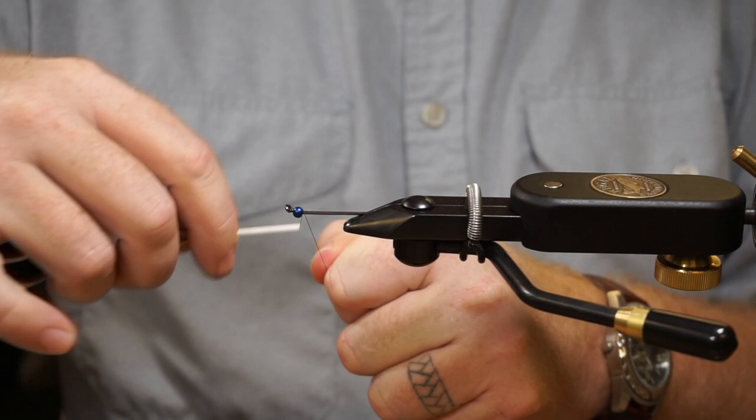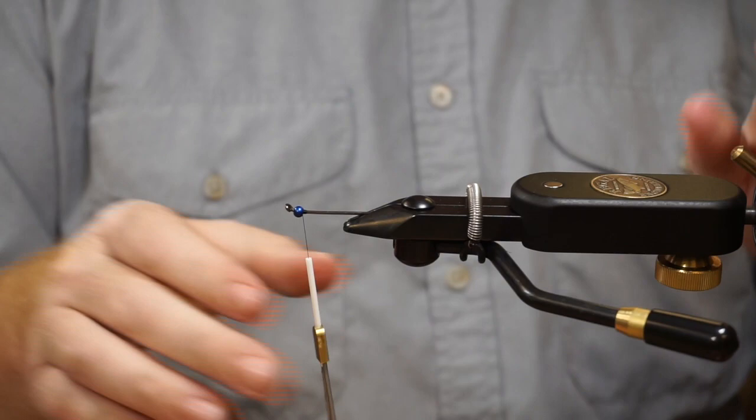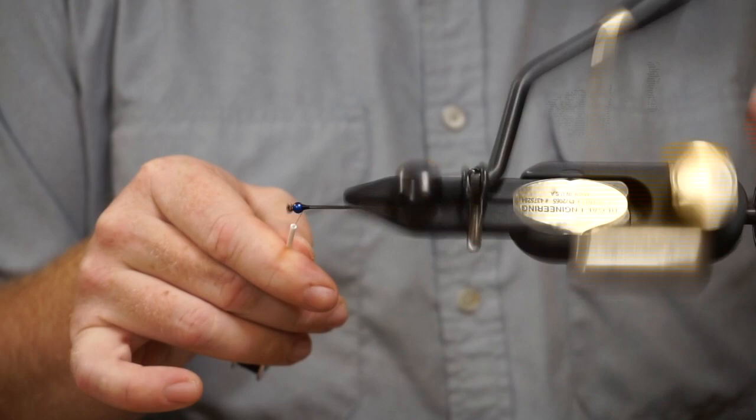As always, first thing, attach the hook, lay down a good base. When you're tying on shanks, they have a tendency to want to slide. So lock that bead into place first, get it up there.